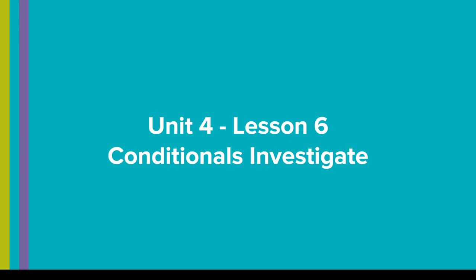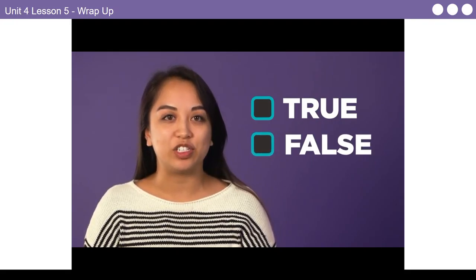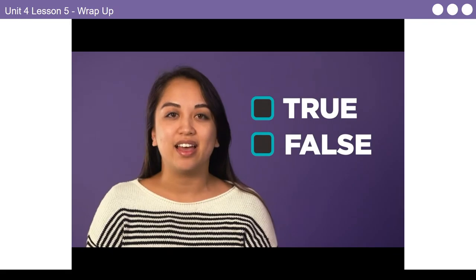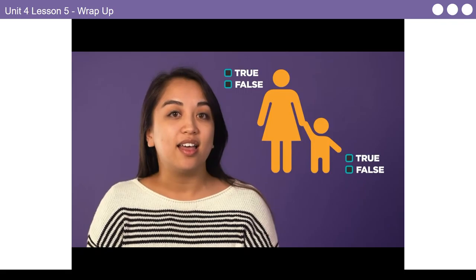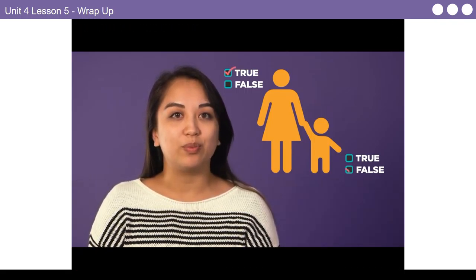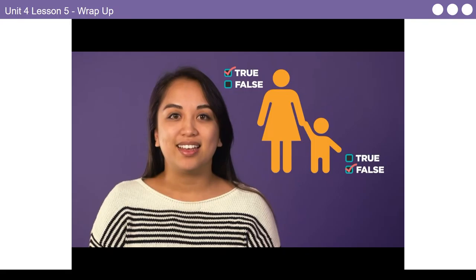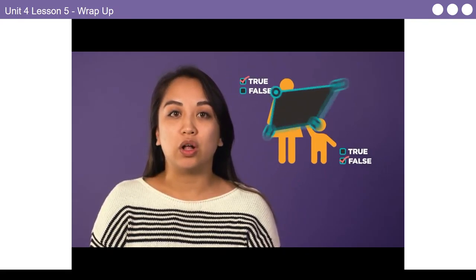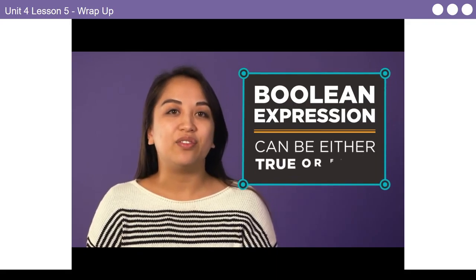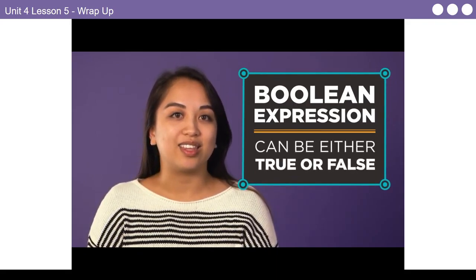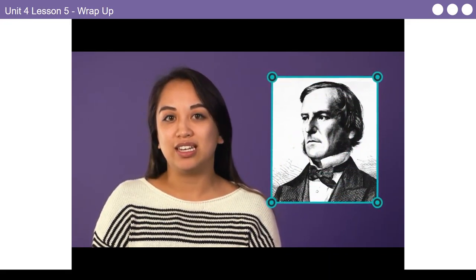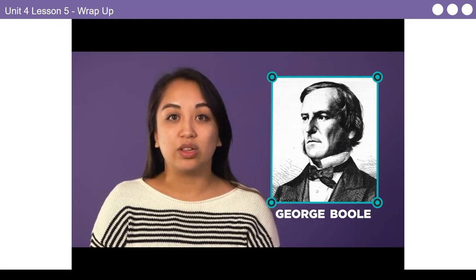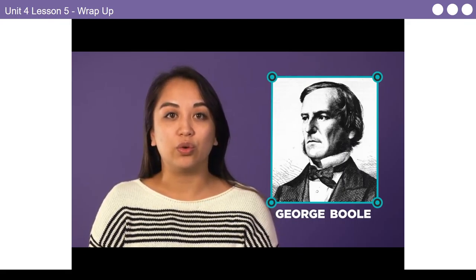When programming, it is often necessary to establish whether something is true or false so that a computer can make decisions about what actions are appropriate to take next. For example, when deciding whether or not to provide voter registration information, the computer must first determine if it is true that the person is old enough to vote. This is done using what programmers call a Boolean expression — you can think of it like a yes or no question that the computer can evaluate. It's called a Boolean because it's named after mathematician George Boole, who made many discoveries related to working with binary true or false values.